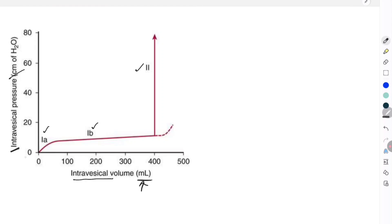What is happening in the first part is that as the intravesical volume increases to roughly about 50ml, there is also a rise in the pressure.